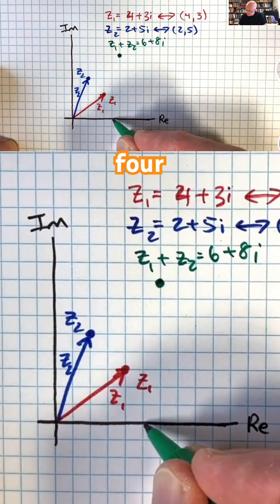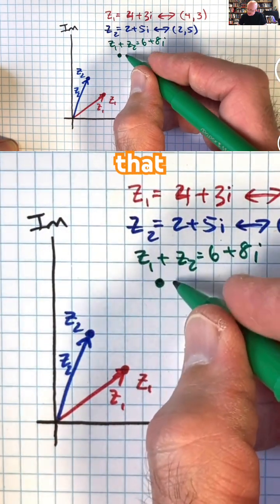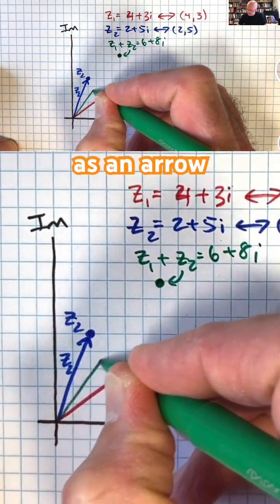Make sure I've counted right here. 4, 5, 6, 2, 3, 4, 5, 6, 7, 8. That is going to be Z1 plus Z2, and I can represent that as an arrow.